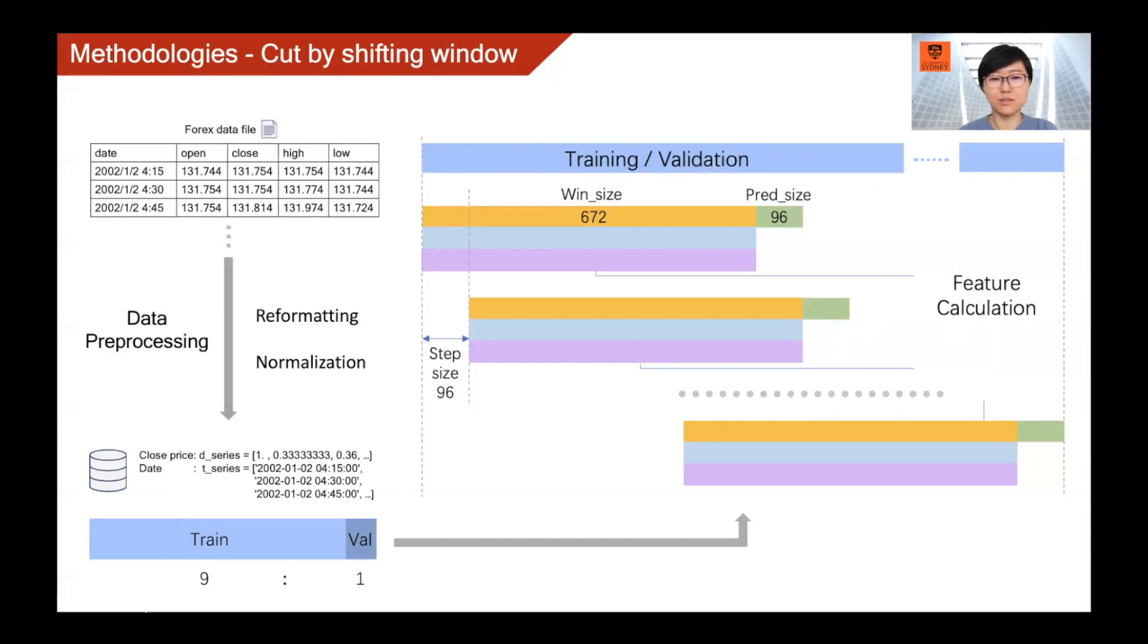It contains the volume of one-day data, 96 points. In order to not lose any information, the shifting window will move forward with a step size as the same of output sequence size. Captured features from each step will be stuck to the input sequence of each window to enrich the feature for optimizing forecasting. Now I will pass to Haoyu.